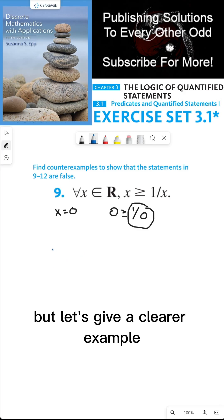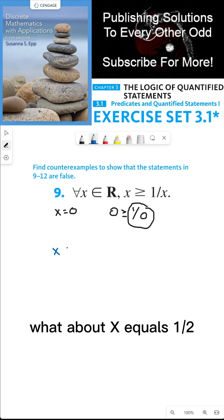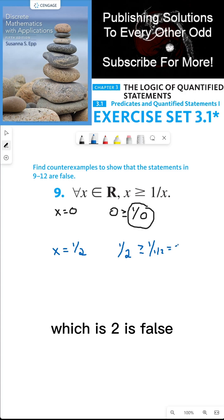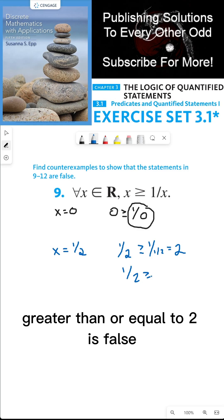But let's give a clearer example. What about x equals one half? Well, here we could see that one half is greater than or equal to one over one half, which is two, is false, because one half greater than or equal to two is false.